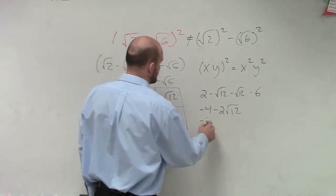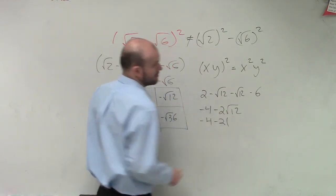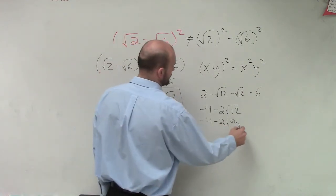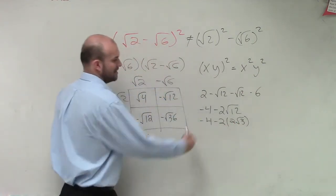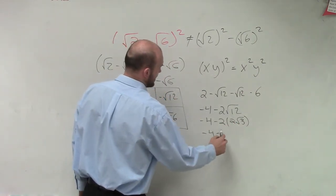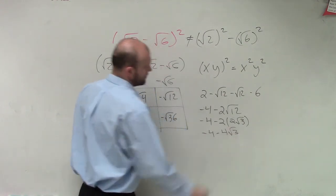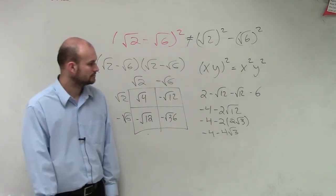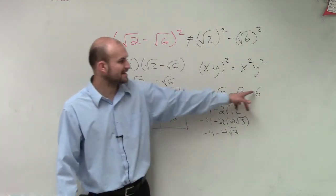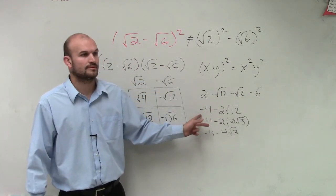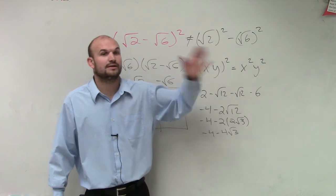Then let's simplify the square root of 12. We know that the square root of 12 is going to be 2 radical 3. Then we multiply negative 4 minus 4 radical 3. What is the 4 minus 2? The numbers you can combine.